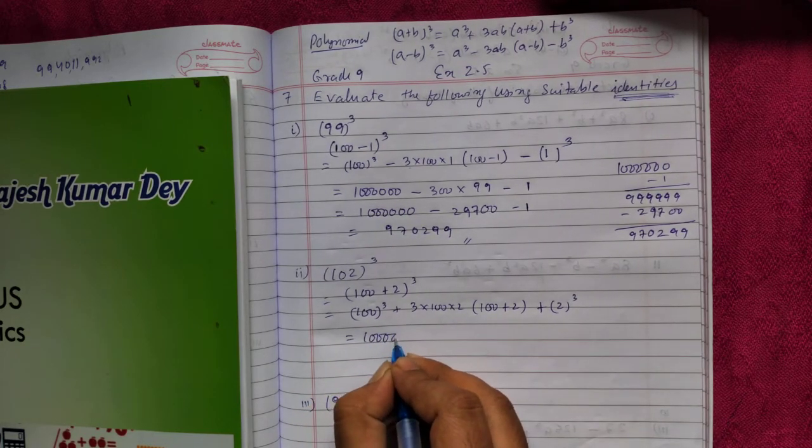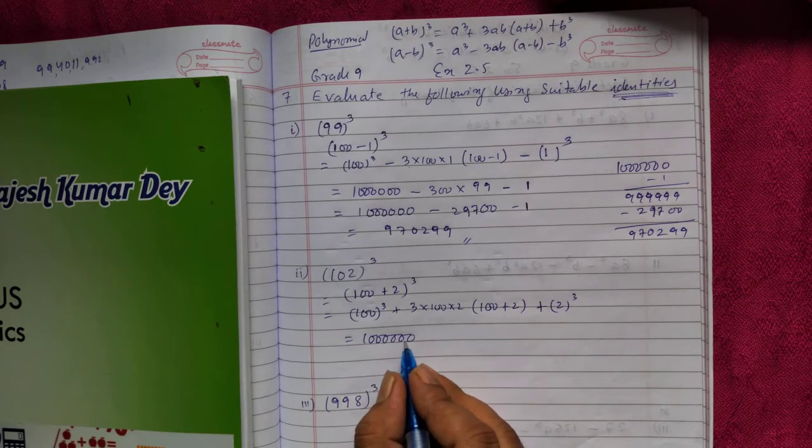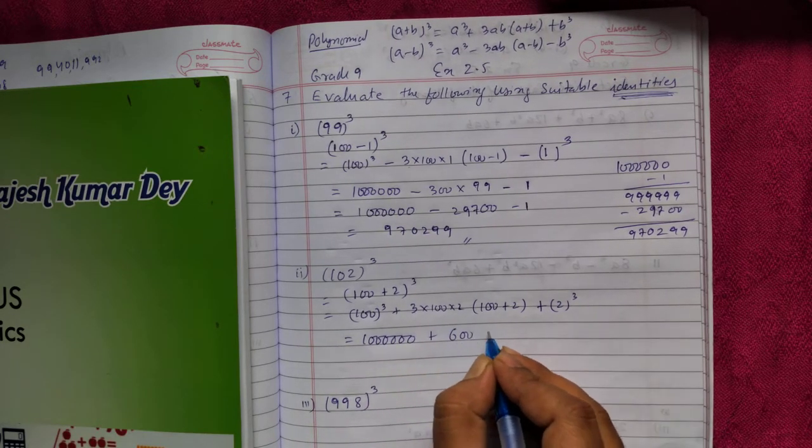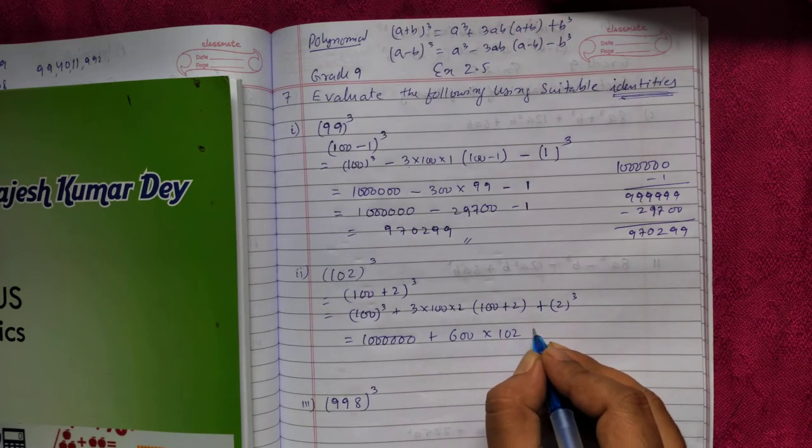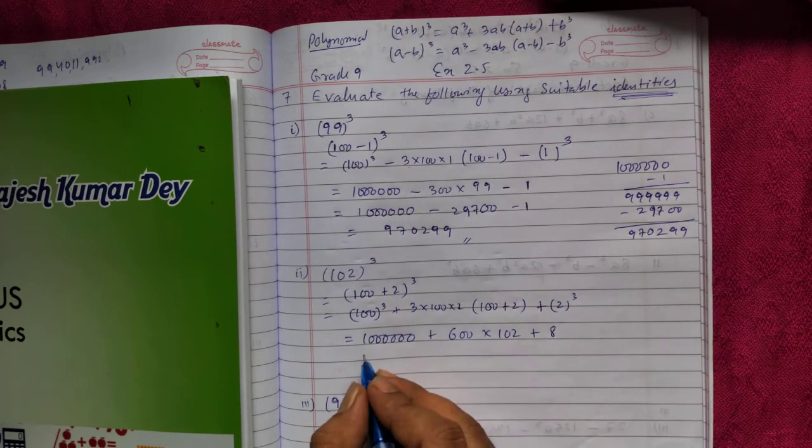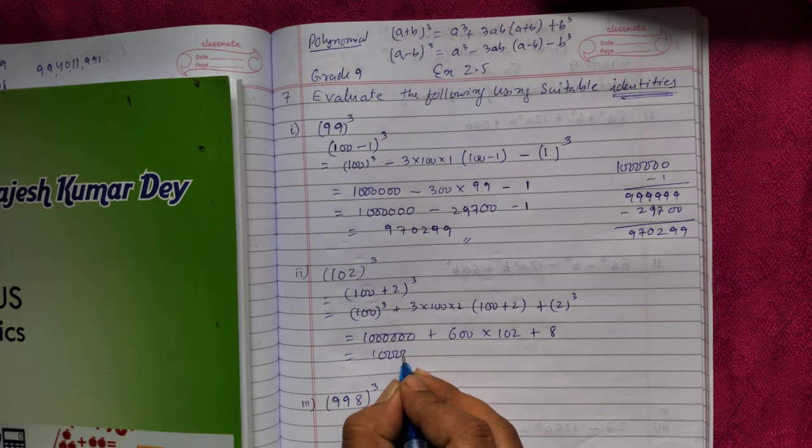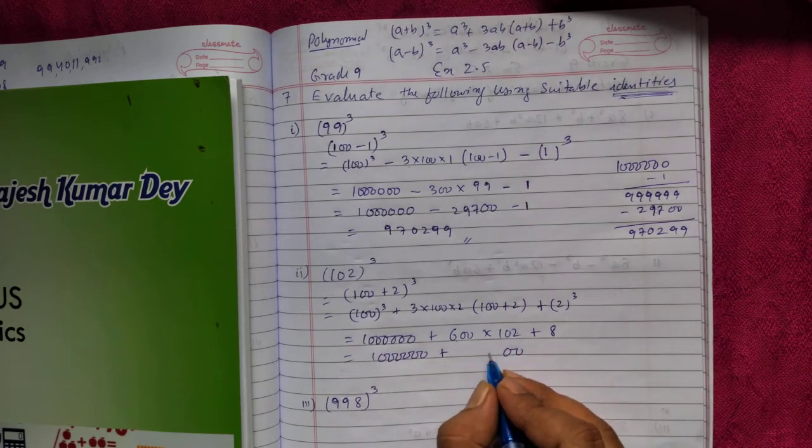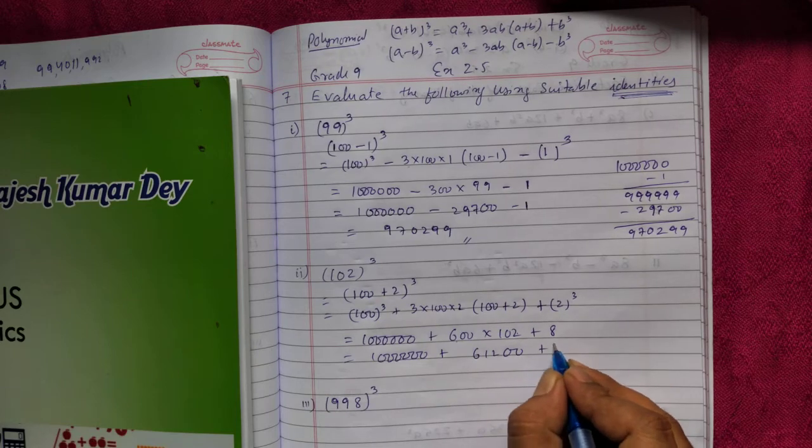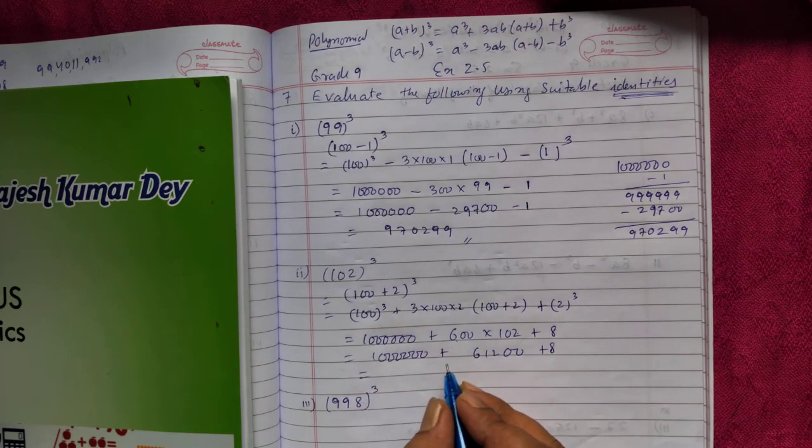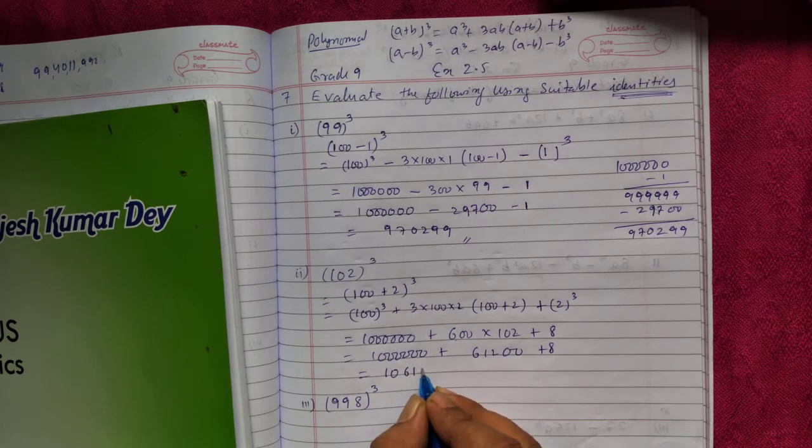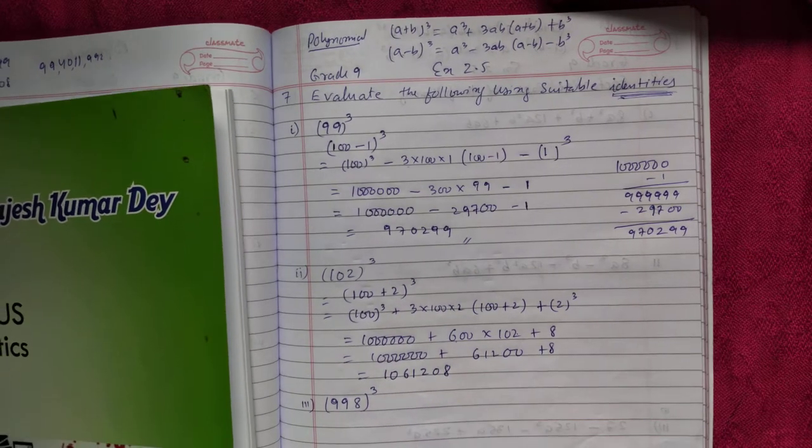A is 100, so A cube plus 3AB plus A plus B plus B cube. 100 cube is this much, 3 times 600 into 102, plus 2 cube is 8. 1000000 plus you multiply this: 6 times 2 is 12, 6 times 1 is 6. Now if you add these three numbers you'll get 1061208.